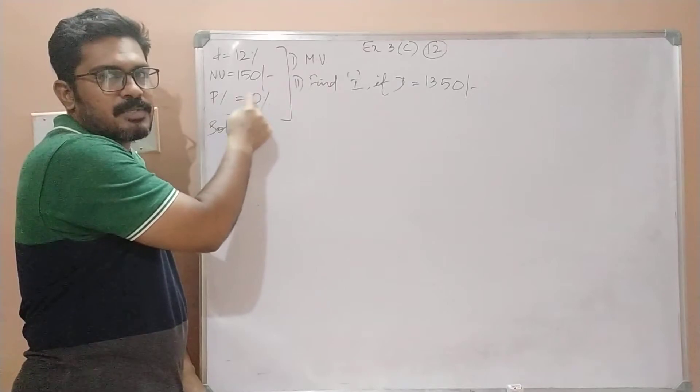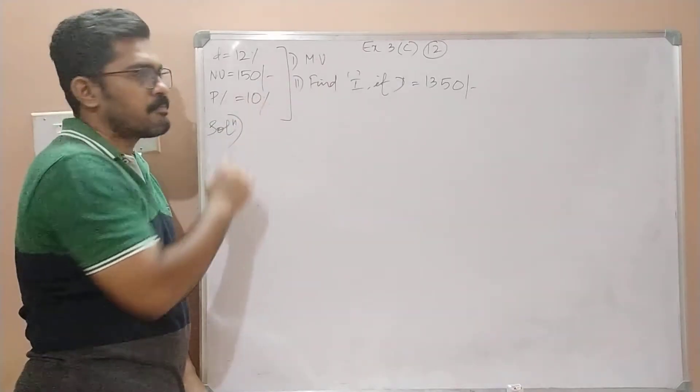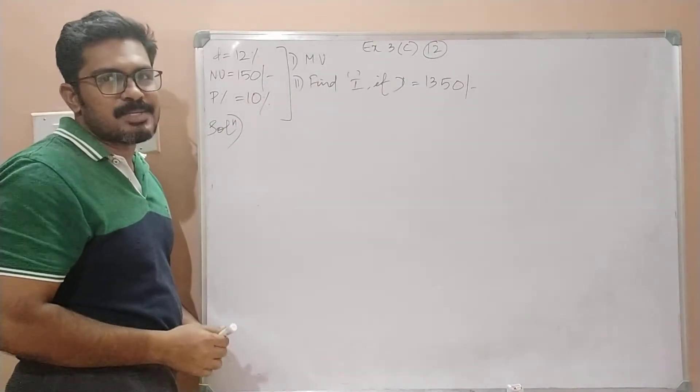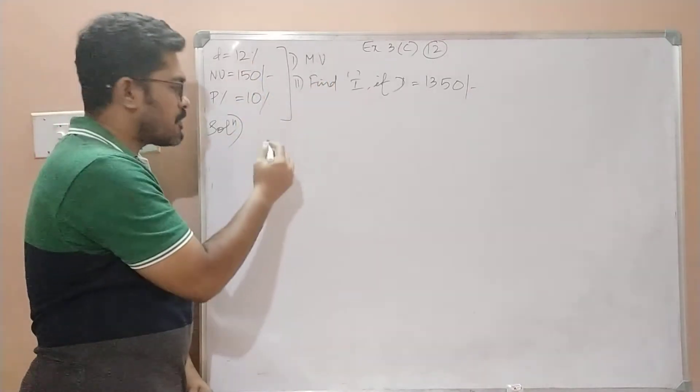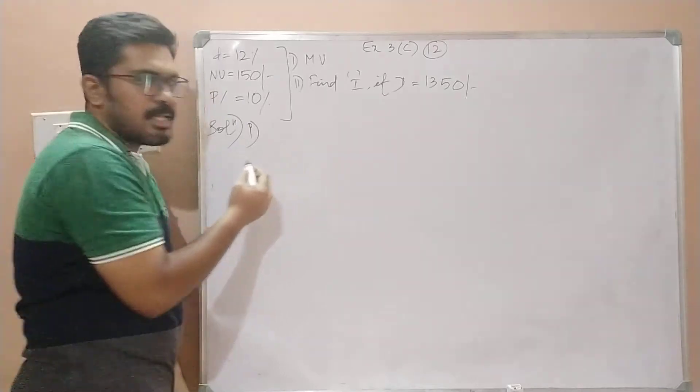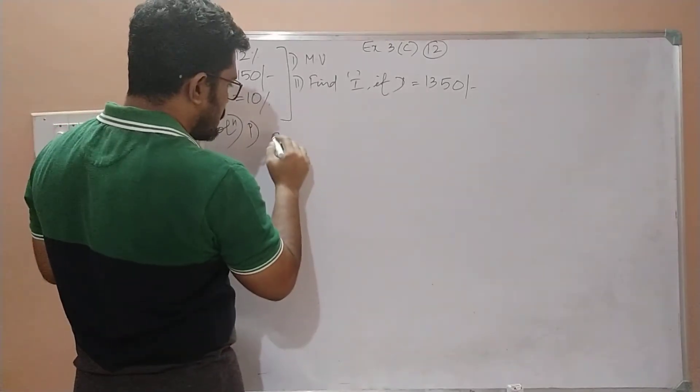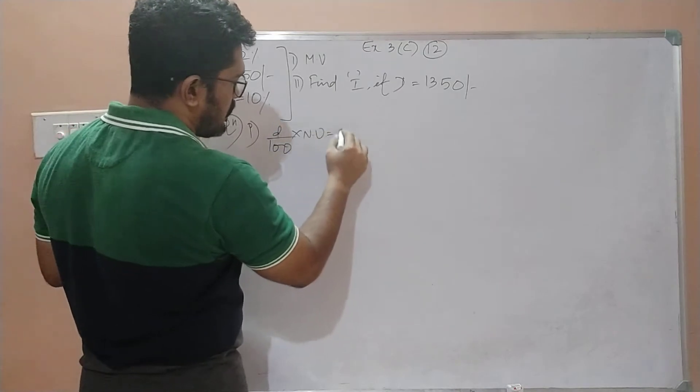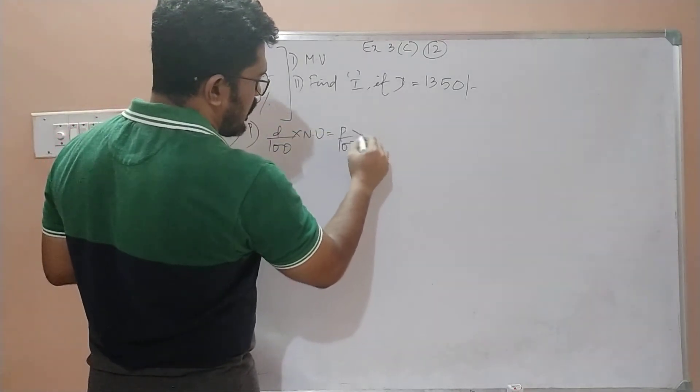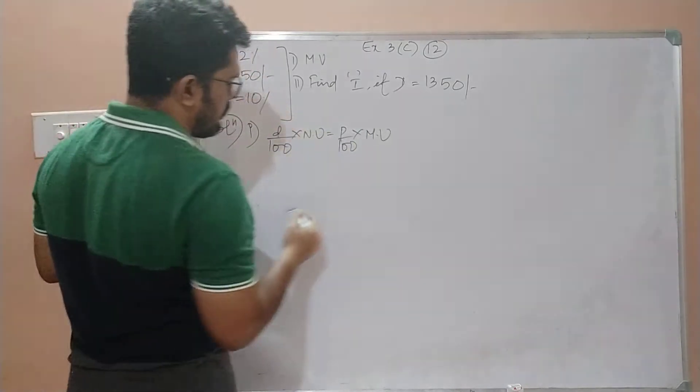So I'll write here P percentage is equal to 10. You have to find the market value. Very simple. Why? Because d, nv, and p are given, you have to find the market value. In that case you can directly use the formula which is d/100 × nv = p/100 × mv.